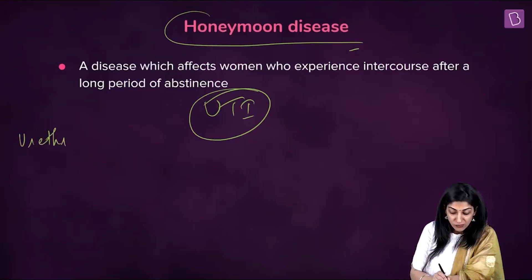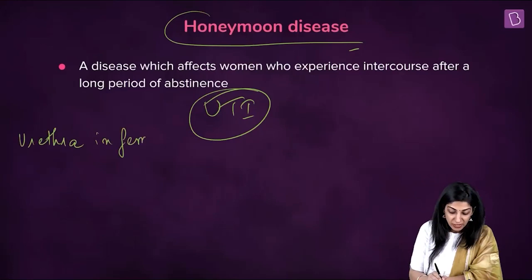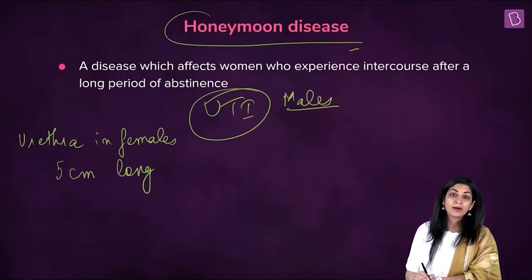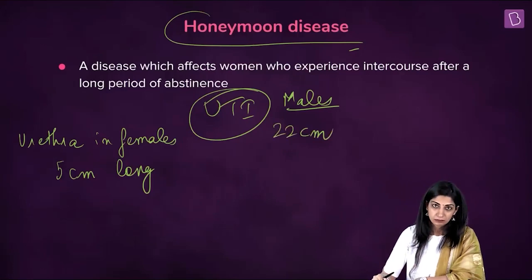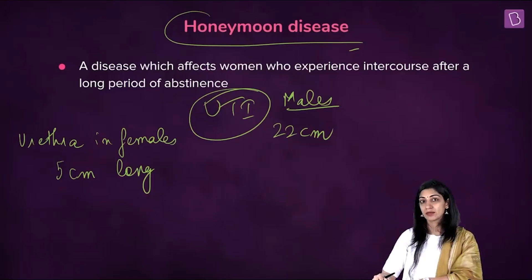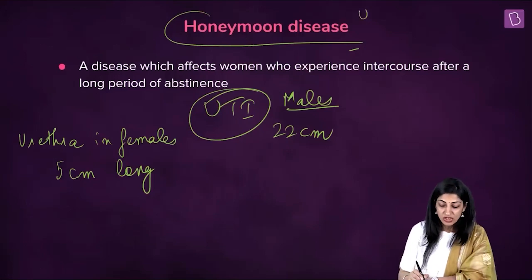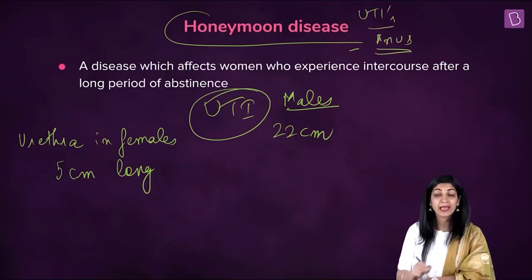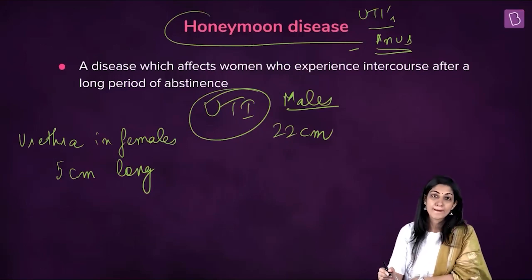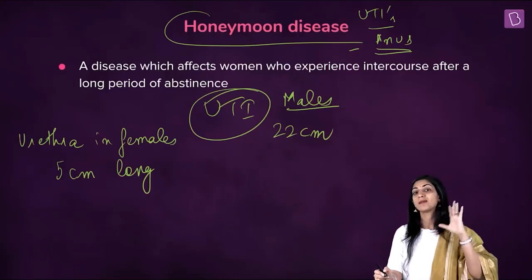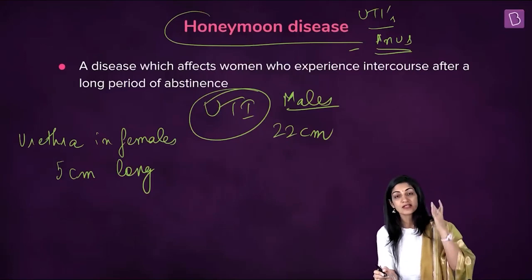The urethra in females is approximately five centimeters long, but in males the urethra is much longer — around 20 centimeters, more than four times longer. So males do not catch urinary tract infections easily, but females do and have to be careful. Most bacteria that cause UTIs live around the anal region, and since the distance between the anal orifice and the urethral orifice is very small in females, bacteria travel easily upward.